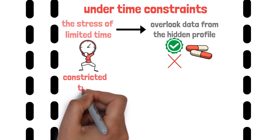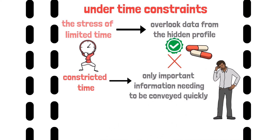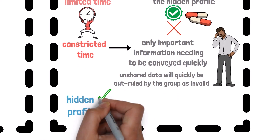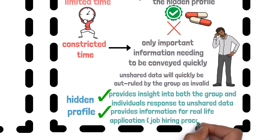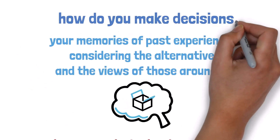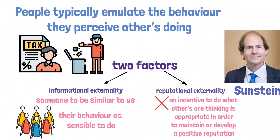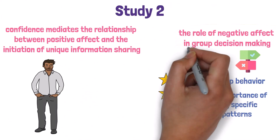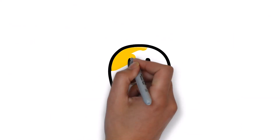Similarly, constricted time lessens some participants' confidence in themselves, and since only important information needs to be conveyed quickly, unshared data is rapidly dismissed by the group as invalid. The hidden profile provides insight into both the group's and individuals' responses to unshared data, and offers information for real-life applications such as job hiring processes. In summary, we have explored how you make decisions, the influence groups have on decision-making, the contagious nature of behavior, and specific factors affecting group decision-making: firstly positive emotions and confidence, secondly common information, and thirdly time pressures.